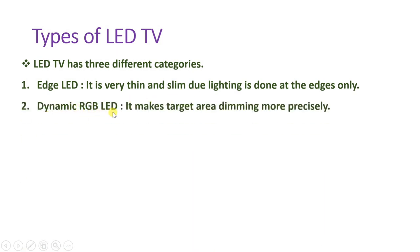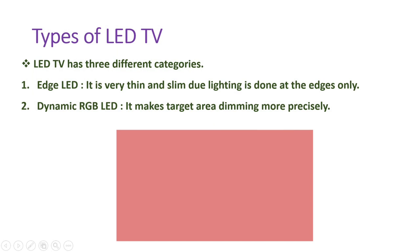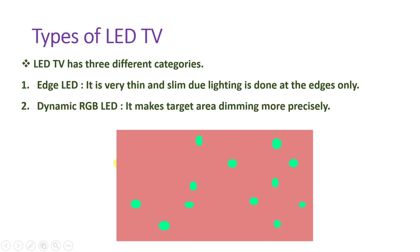The second category is Dynamic RGB LED. In this type, there is an array of LEDs across the entire back of the screen. It has a smart local dimming facility — for example, in an image with darker and lighter portions, the LEDs in the darker portion will dim while the LEDs in the brighter portion will shine brightly. So dynamic RGB LED provides precise local dimming using a full LED array.